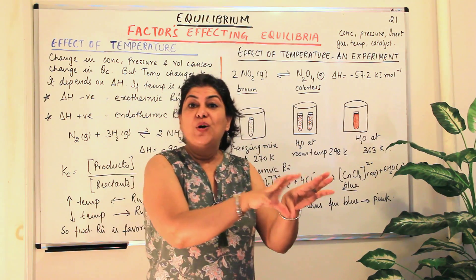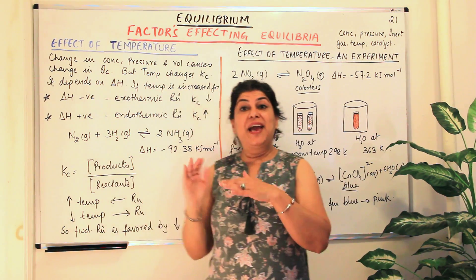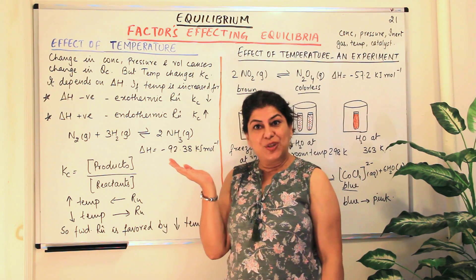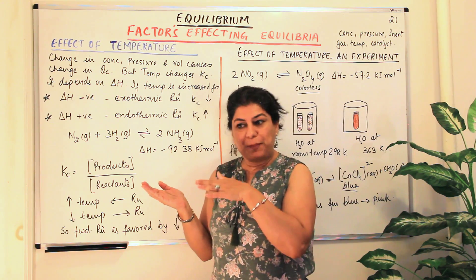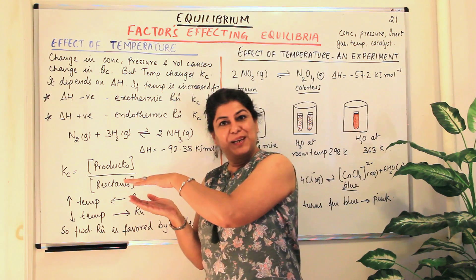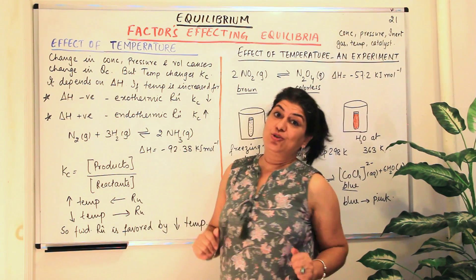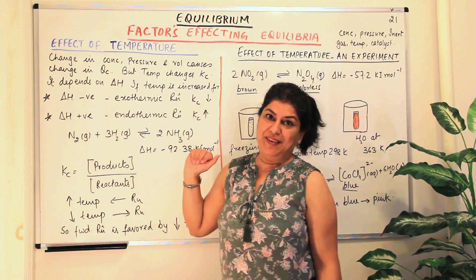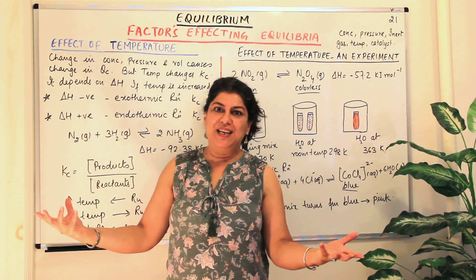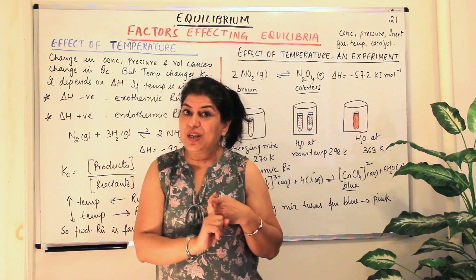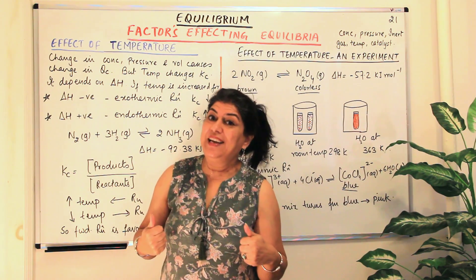So when you give heat to an exothermic reaction, it does not accept or want that heat. In an equilibrium, one direction is exothermic and the other is endothermic. So when you give heat, the endothermic reaction is favored and that side will start reacting. If it was exothermic in the forward direction and endothermic in the backward direction, providing heat will cause the reaction to proceed in the backward direction. Exothermic reactions are favored by lowering temperature and endothermic reactions are favored by increasing temperature.